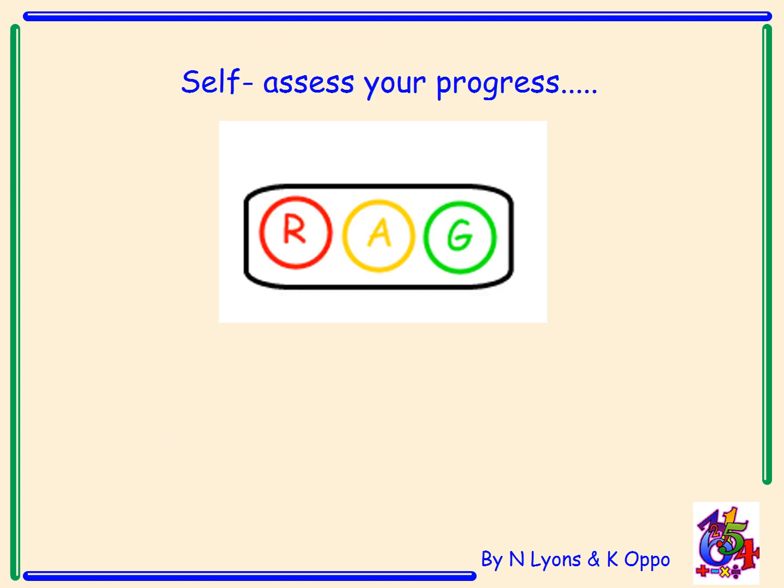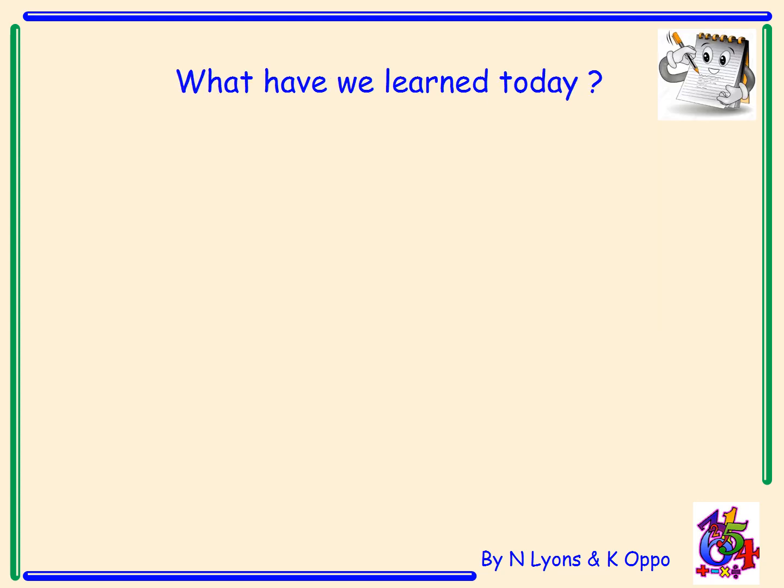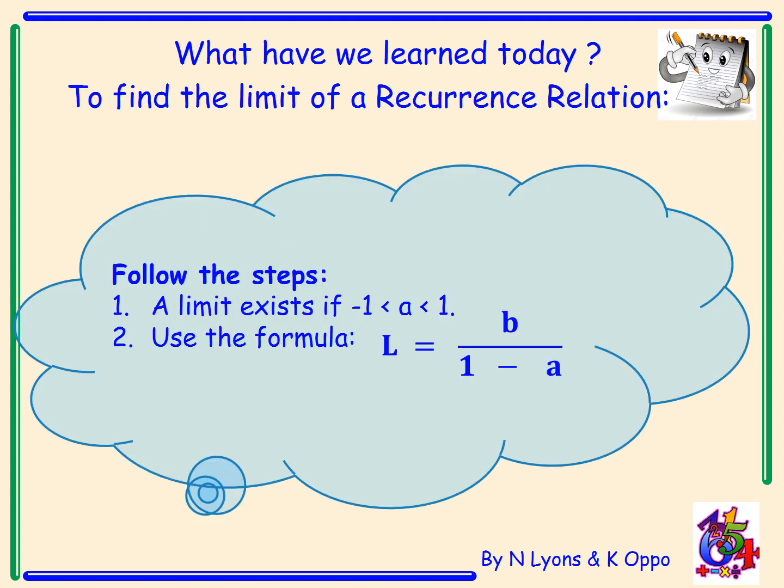Please self-assess your progress. So what have we learned today: to find the limit of a recurrence relation, we first check the condition — a limit exists if the value of a lies between negative 1 and 1. If a limit does exist, we use the formula L = b/(1 − a).